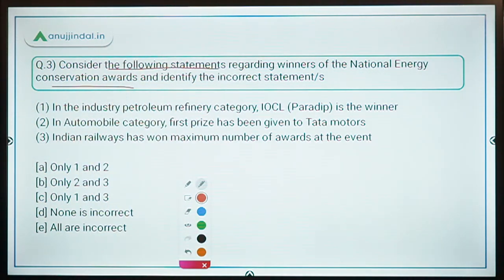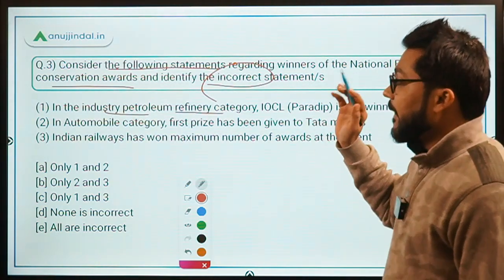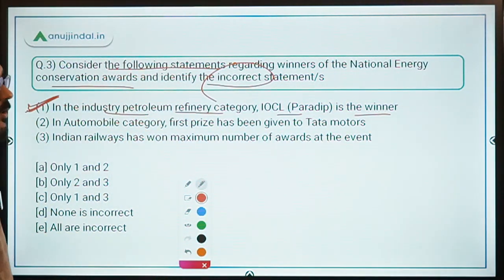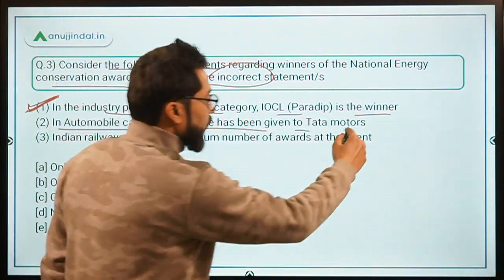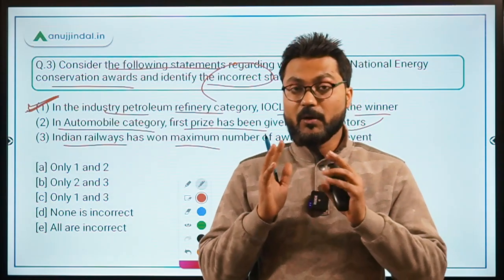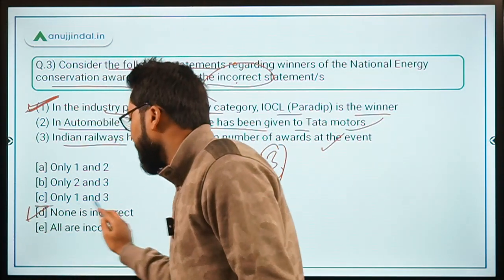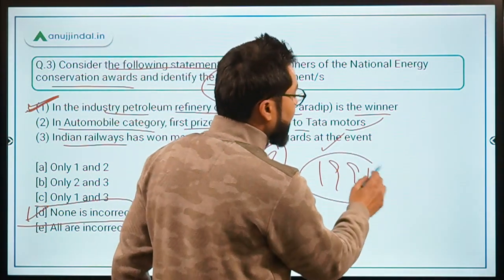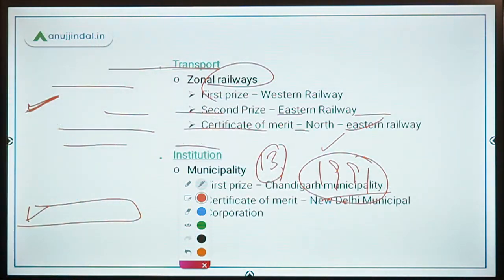For question three, you have to identify the incorrect statements regarding winners of the National Energy Conservation Awards. Statement one: In the industry petroleum refinery category, IOCL Paradip is the winner — correct, IOCL Paradip won while BPCL Kochi received the certificate of merit. Statement two: In the automobile category, the first prize was given to Tata Motors — correct. Statement three: Indian Railways won the maximum number of awards, that is 13 — also correct. Since all statements are correct, option D — none is incorrect — is the answer. Also note: the first edition of National Energy Conservation Awards was held in 1991, making 2020 the 30th edition.